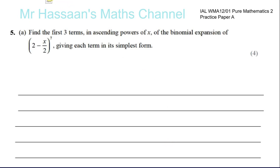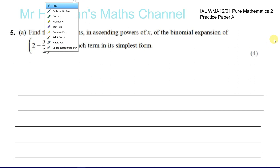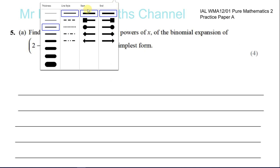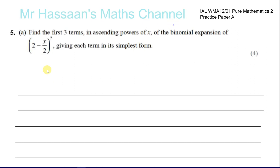Question number 5, Part A, from Pure Mathematics 2, Practice Paper A, International A Level. Here we have binomial expansion. Find the first three terms in ascending powers of x of the binomial expansion of 2 minus x over 2 to the power of 7, giving each term in its simplest form.